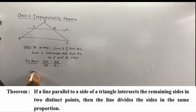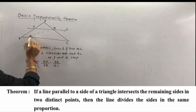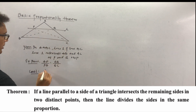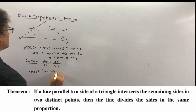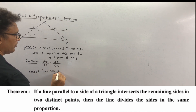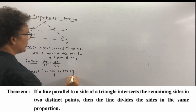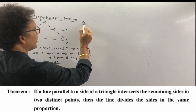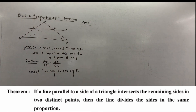For construction, we will join segment BQ and segment PC. Very simple — pay attention. Join segment BQ and join segment PC. Now let us check the proof — there are only four steps.